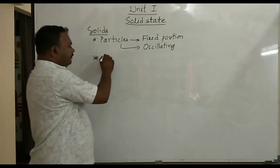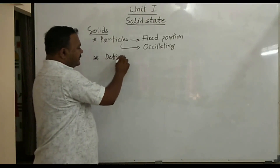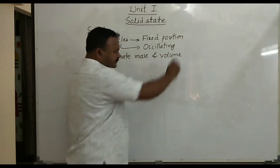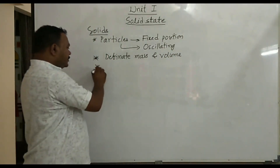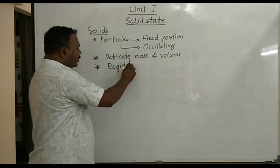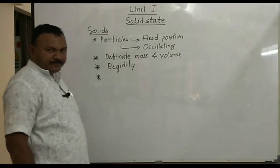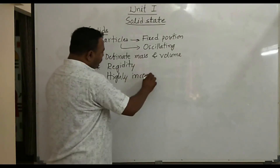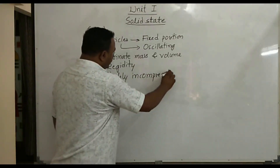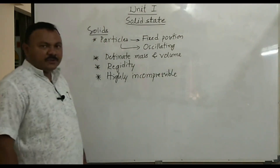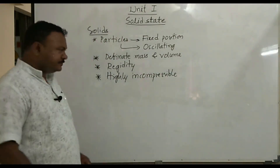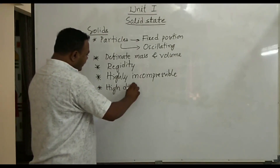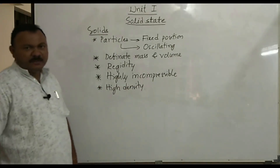Solids have definite mass and definite volume. Solids show rigidity — they cannot move from one place to another. Solids are highly incompressible, because the particles are already very close to one another and cannot be compressed further. Solids show high density. Like this, we can list many important properties of solids.